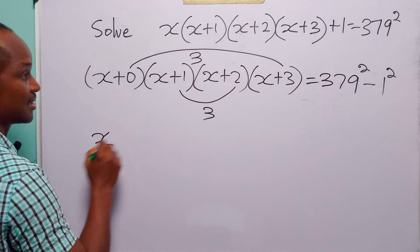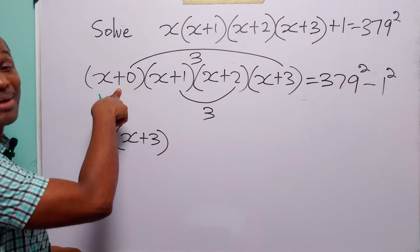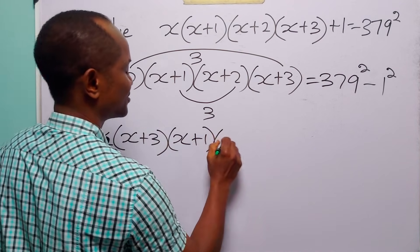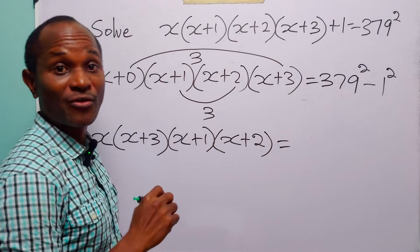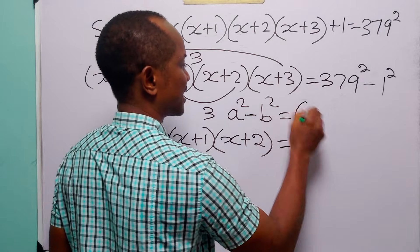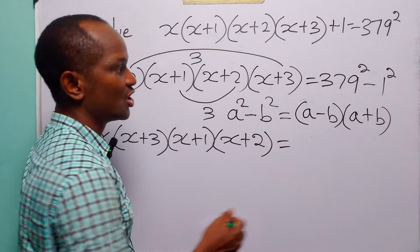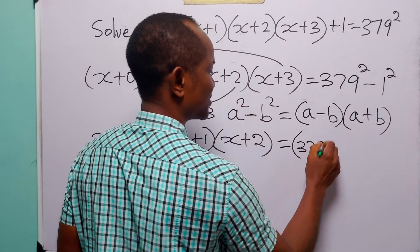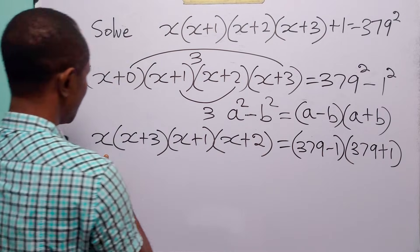We have x multiplied by x plus 3 — which is the same as x plus 0 — and then x plus 1 next to x plus 2. Remember how we factorize the difference of 2 squares: a squared minus b squared can be written as (a minus b)(a plus b). So 379 squared minus 1 squared can be written as (379 minus 1) multiplied by (379 plus 1).